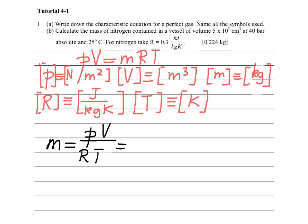Which gives us 40 times 10 to the power of 5. We have to use newton per meter squared for the pressure, remember? And the volume is 0.005 divided by R.